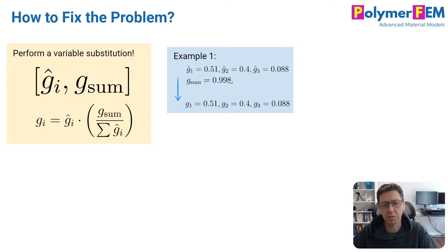And we pick g sum equal to 0.998, then the g values will become exactly the same as the g hat values, because the sum of the g hat values are the same as the g sum. So that's easy, they become the same.